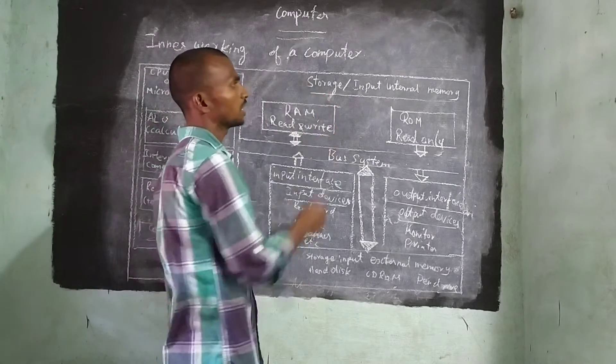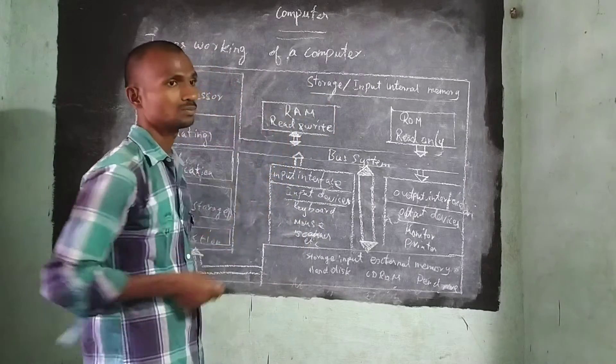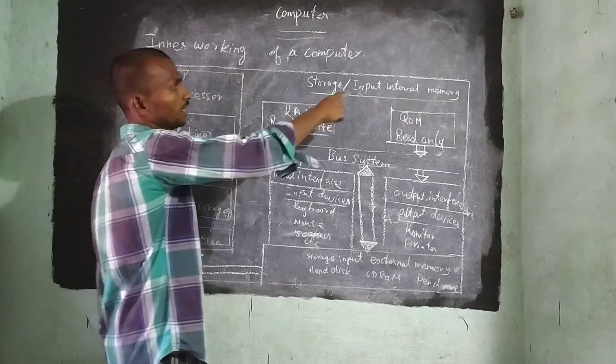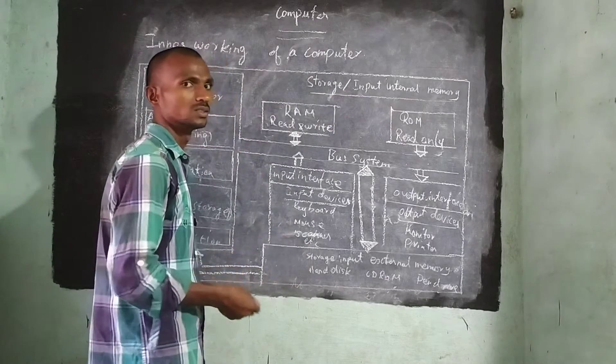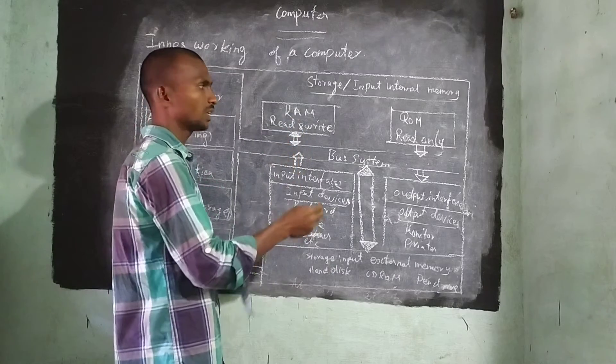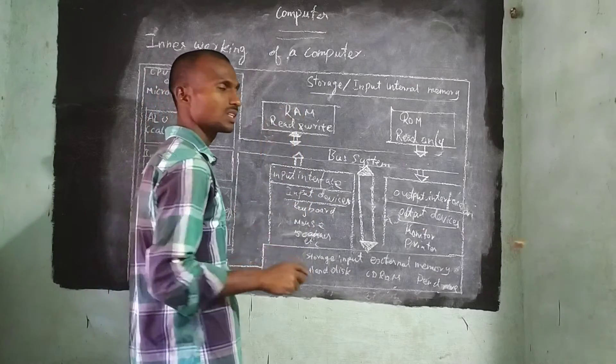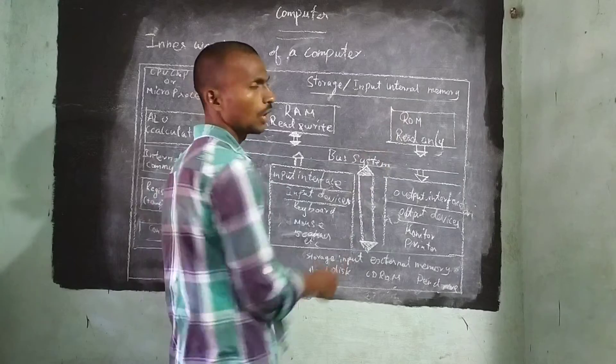So next. This set. Storage or Input or Internal Memory. Input or Internal Memory means what? So Input. Internal Memories. What are the internal memories? Two internal memories are there. One is RAM. Another one is ROM.